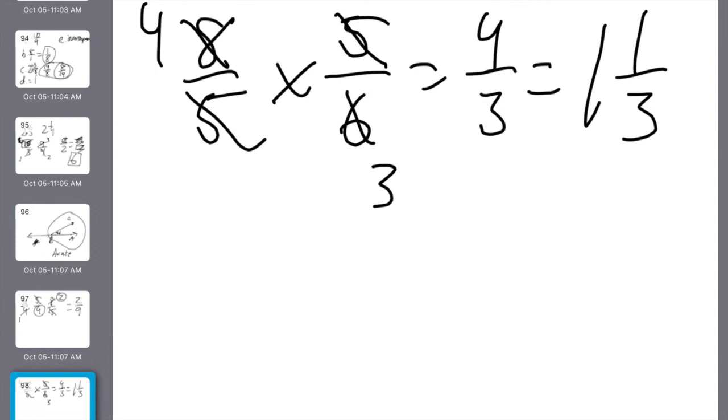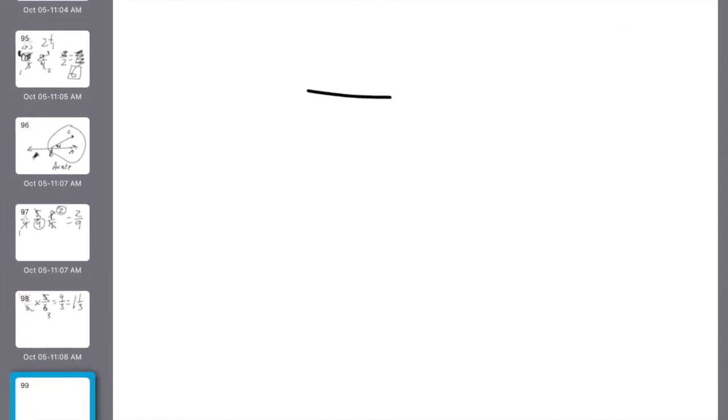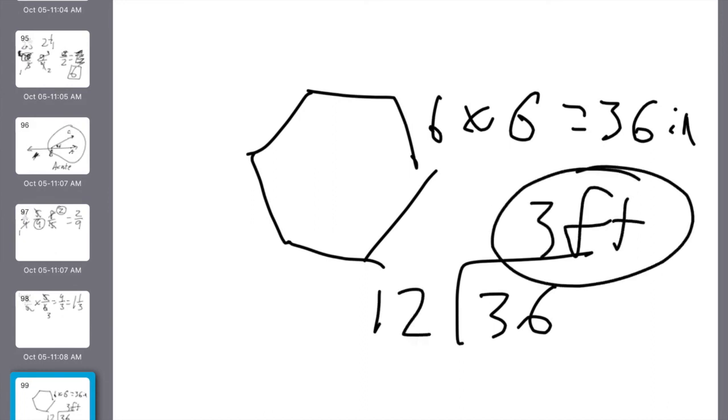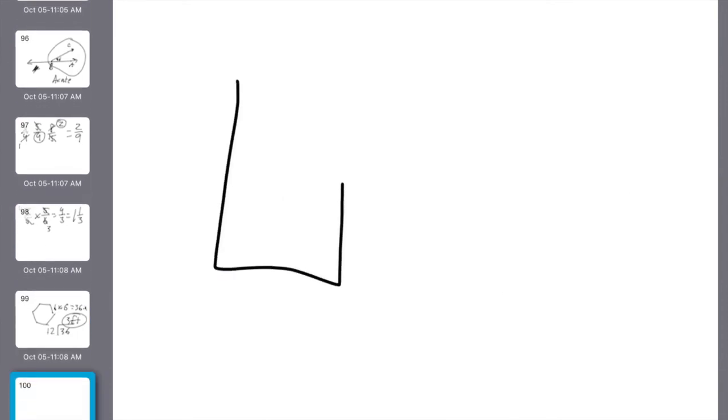28. A regular hexagon is inscribed in a circle. If one side of the hexagon is 6 inches long, then the perimeter of the hexagon is how many feet? So you have a hexagon. That's 6 sides. Each one is 6. 6 times 6 is 36. It's 36 inches. They asked me for feet. How many inches in a foot? 12. So I take my 36. I divide it by 12. That gives me 3 feet.